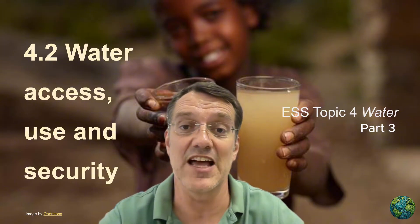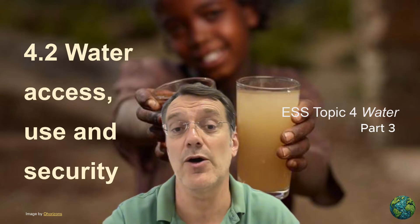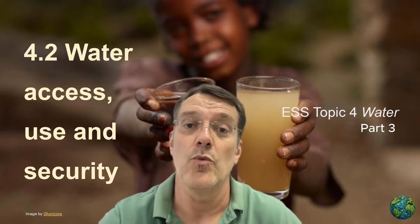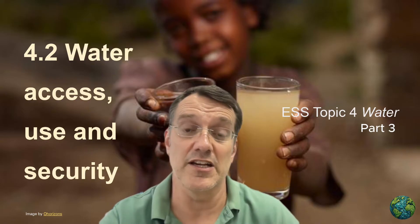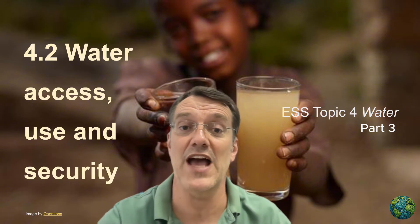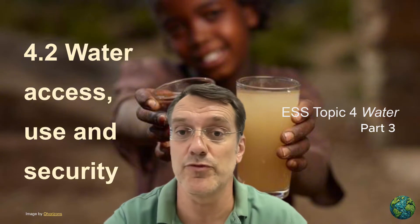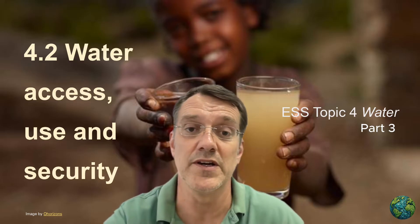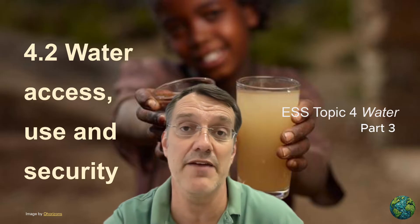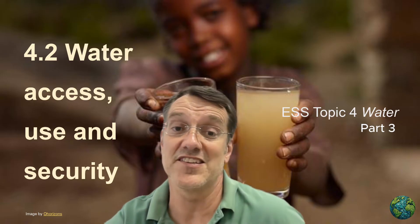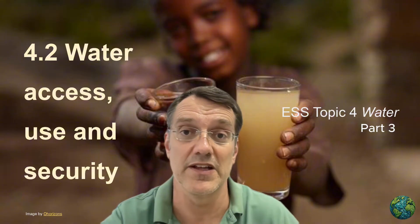We're going to begin by examining domestic conservation techniques — approaches that individuals and households can implement. Then we'll scale up to industrial level conservation and food production systems, exploring innovative approaches that can dramatically reduce agricultural water consumption. Finally, we'll take a look at some successful mitigation strategies from around the world. These case studies show how combining technological, policy, and behavioral approaches can create sustainable water futures even in the most challenging environments. So let's get into it.